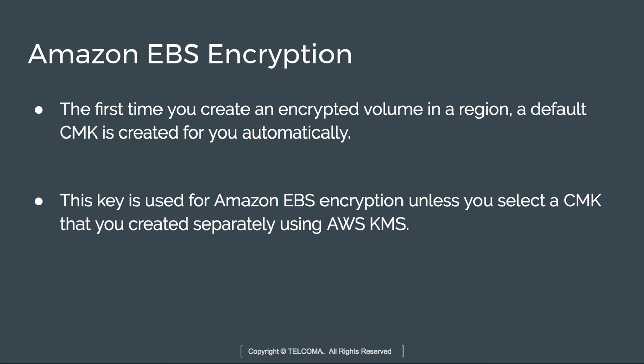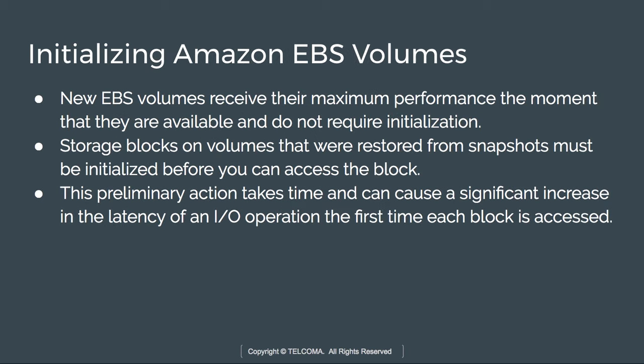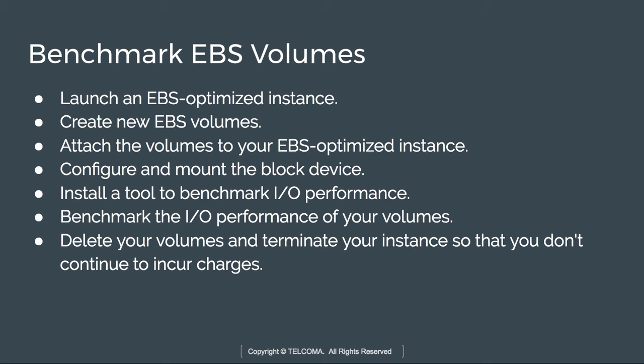When creating a new EBS volume for maximum performance, storage blocks on volumes restored from snapshots must be initialized before you can access them. We also need to check the input/output characteristics and monitoring in EBS volumes. For benchmarking, launch an EBS optimized instance, create and attach a new volume, configure it, install a benchmarking tool to measure I/O performance, and then delete the volumes when done.